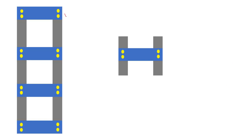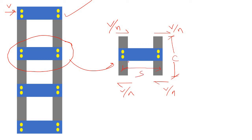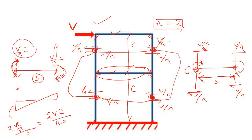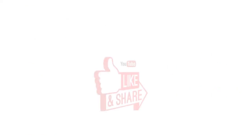Now replacing the portal frame with the built-up battened column and isolating any particular batten: if the lateral load is V, then V/n acts at each joint. The center-to-center distance is c and the spacing is s. Therefore, the moment acting on the batten is Vc/n, and the shear force on the batten is 2Vc/(n·s). That covers all the forces acting on a batten.